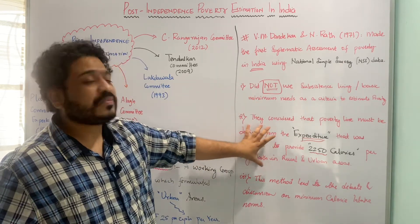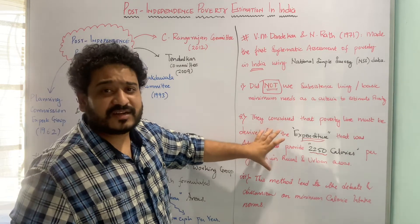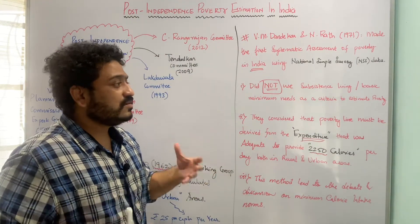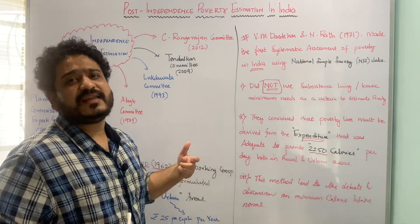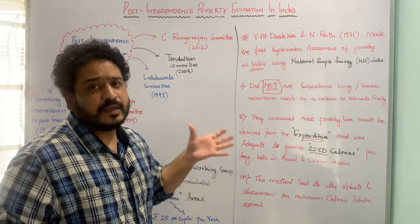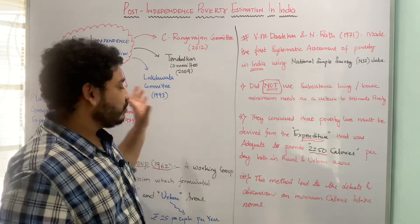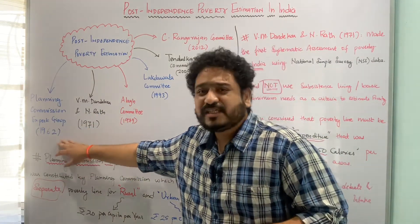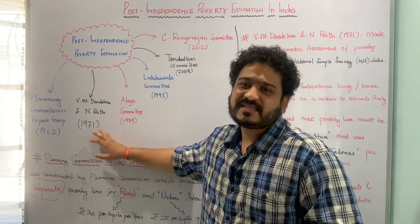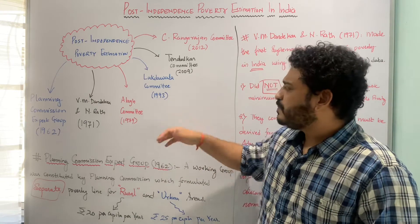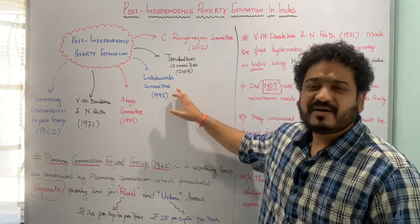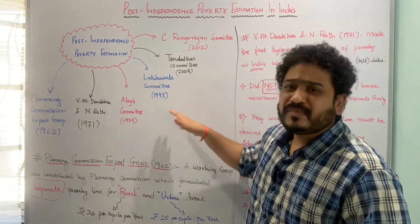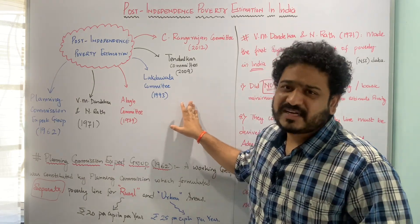This calorie-based approach instigated a debate in the Indian context with respect to what should be the magic figure for calorie intake per day. This is how further revision of the poverty line has taken place in India, as we will see with the different committees discussed. I hope the idea of both the Planning Commission expert group in 1962 and the Dandekar and Rath estimates of 1971 is clear. In upcoming lectures, I will be talking about the Alak Committee, then the Lakhdawala, Tendulkar, and Rangarajan Committees, and provide a comparison of the important ones. Please stay tuned. Thank you.